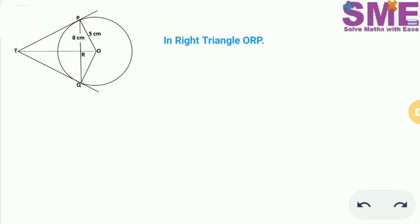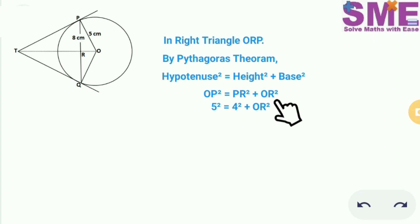Now in right triangle ORP by Pythagoras theorem we have hypotenuse square is equal to height square plus base square. We have OP square is equal to PR square plus OR square. So we have OP is equal to 5 and PR is equal to 4. From this we can calculate the value of OR. So simplifying this we get the value of OR is equal to 3 cm.